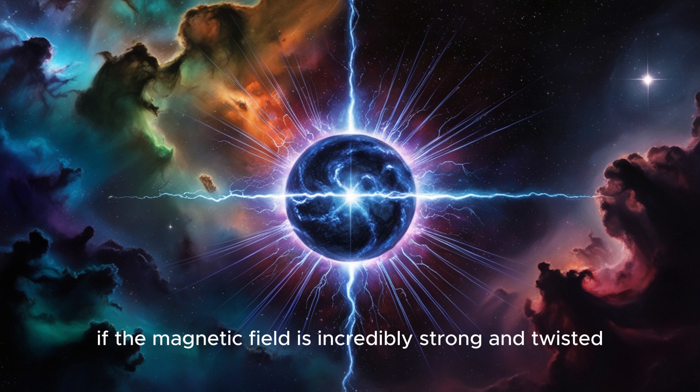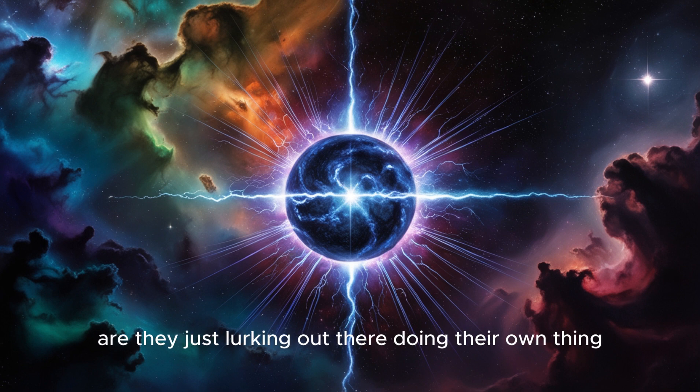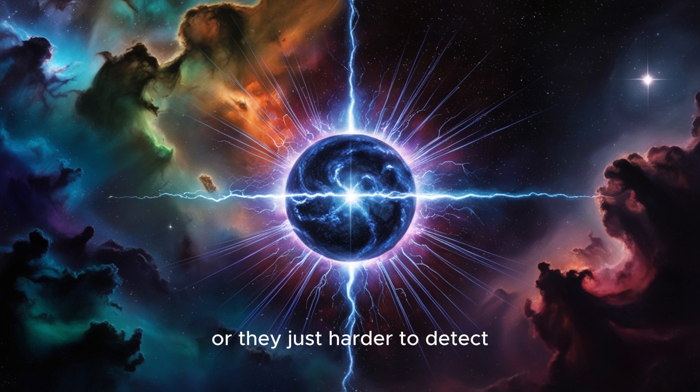Because those beams are what give pulsars their characteristic pulse, right? It's like they're winking at us across the vastness of space. Precisely. On the other hand, if the magnetic field is incredibly strong and twisted, it could lead to the formation of a magnetar with those powerful starquakes and bursts of energy that we talked about earlier.